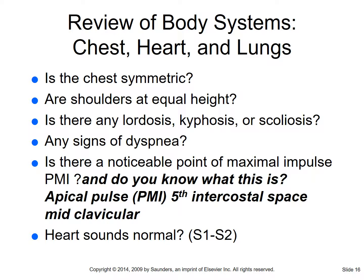Moving down to chest, heart, and lungs: is the chest symmetric, are the shoulders at equal height, is there any spinal curvature? Lordosis is a forward curve of the lumbar spine - you see this in pregnant women. Kyphosis is the hunchback - affecting the upper thoracic or cervical area. Scoliosis is the S-curve, like a snake, curving of the spine laterally. Also assess for any signs of dyspnea - are they leaning forward struggling to breathe, using accessory muscles, is breathing labored or non-labored?